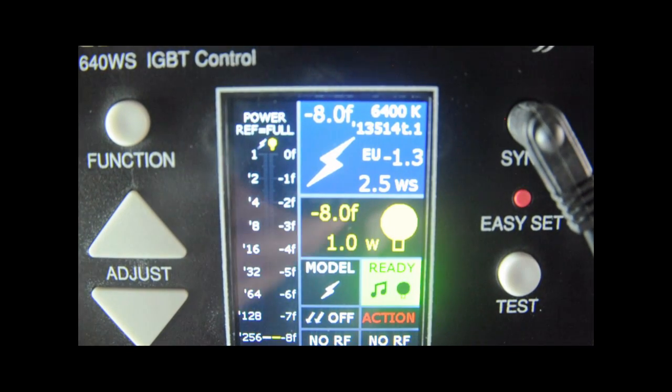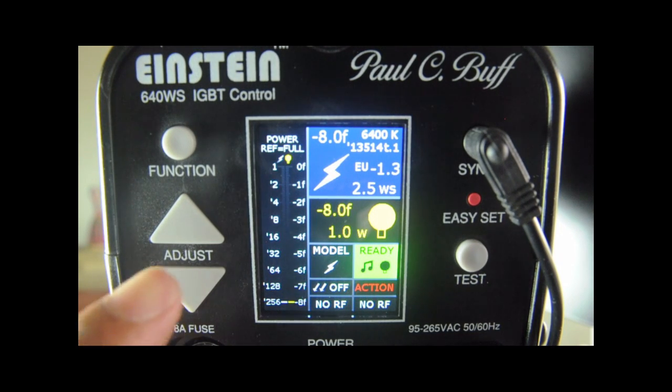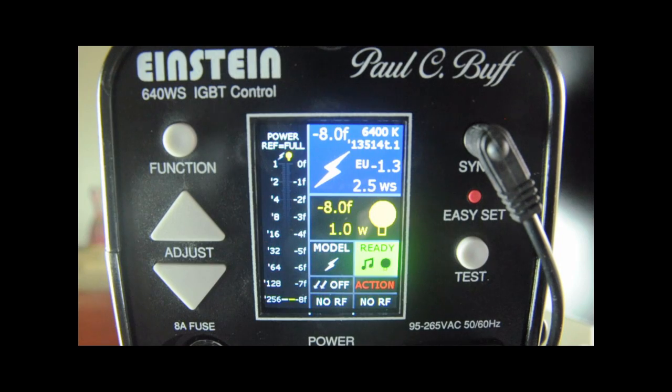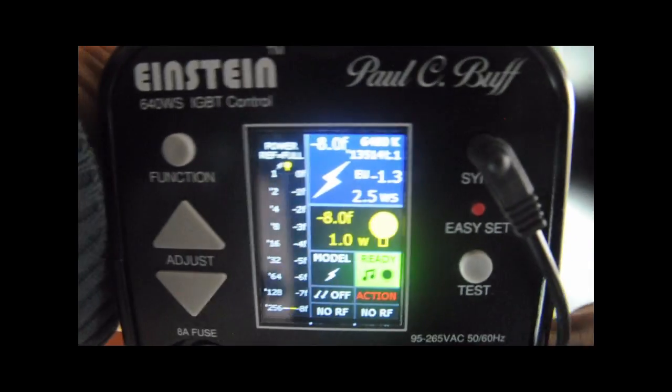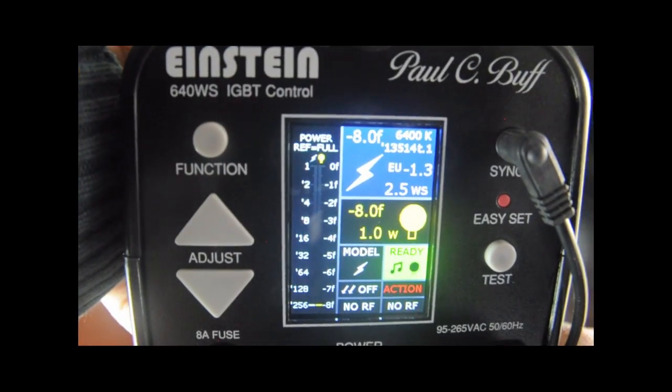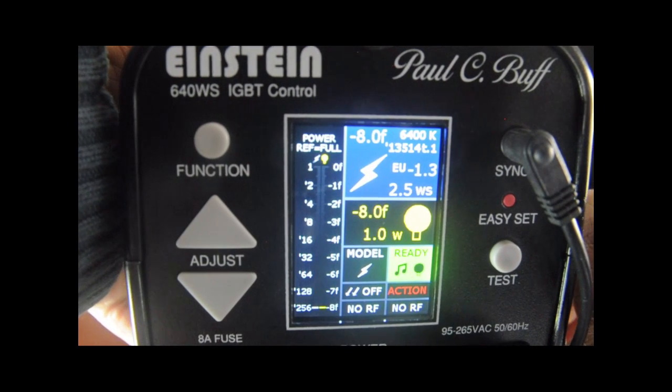Our last setting here - we've got our radio frequency indicators. I don't have the Cybersync system, but as a reminder, you will plug your Cybersync module there in the top, the receiver, put the transceiver on your camera, and you can control this wirelessly, including all of its functions.